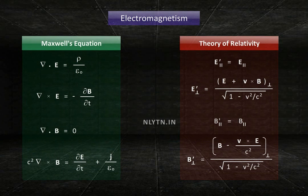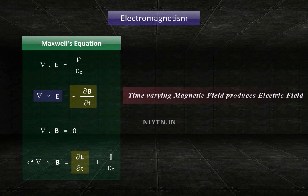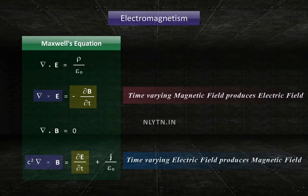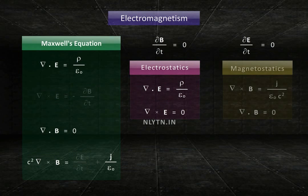Both of them are beyond the scope of this course. However, even without going into the details of Maxwell's equations, we can see that a time-varying magnetic field produces an electric field, and a time-varying electric field produces a magnetic field. We will discuss more on this in the next chapter. For now, we can just say that electric and magnetic fields are entangled with each other, and one changing field produces the other. However, if the fields are not changing, then these effects disappear and we are left with the equations of electrostatics and magnetostatics.